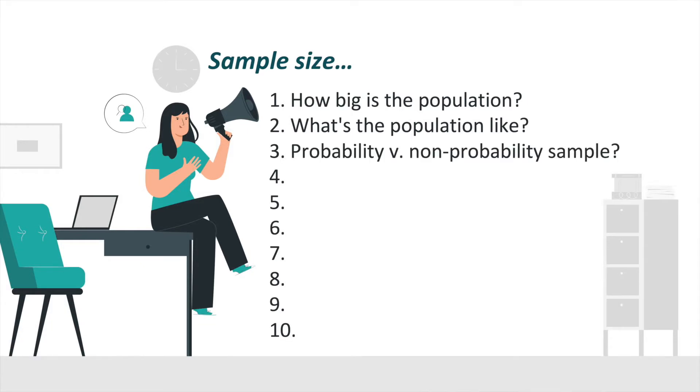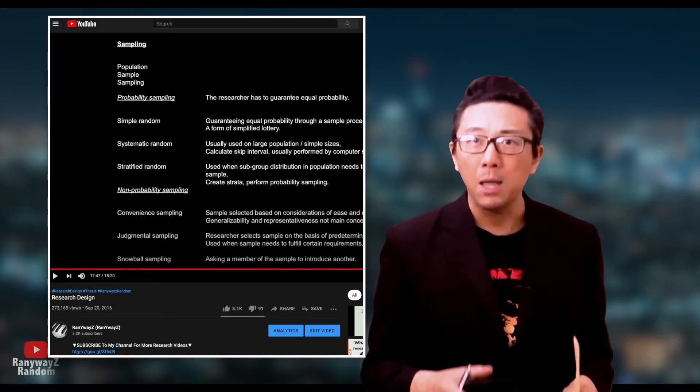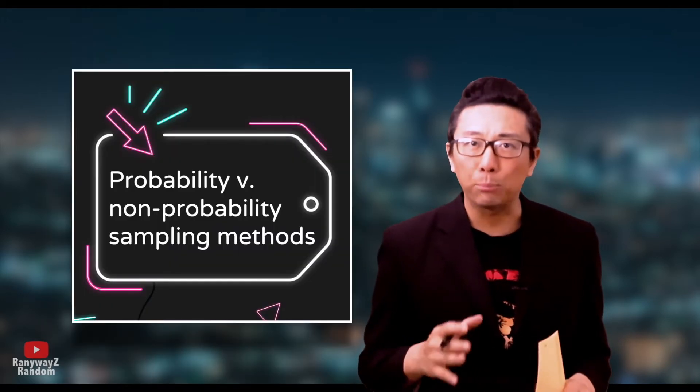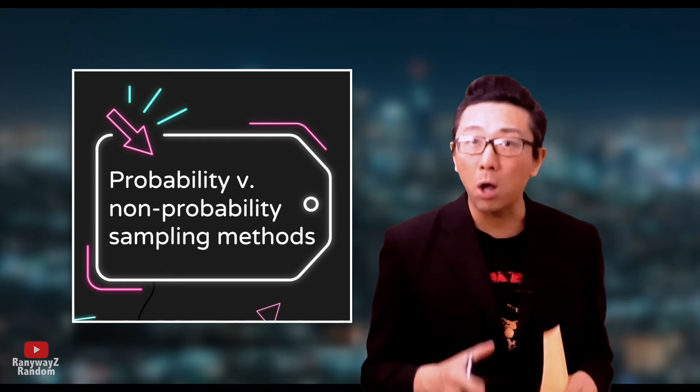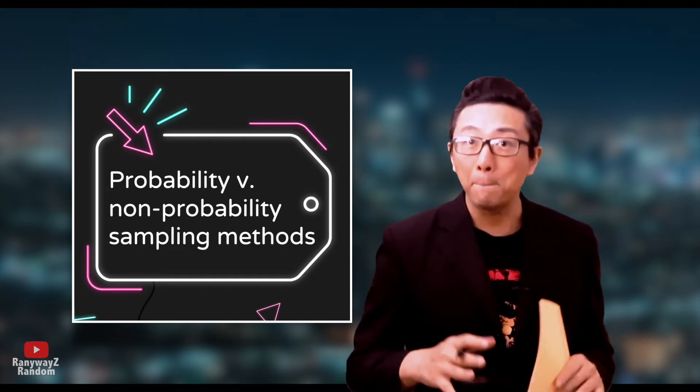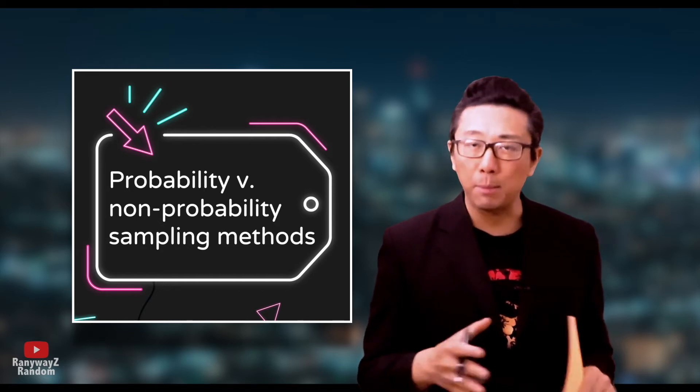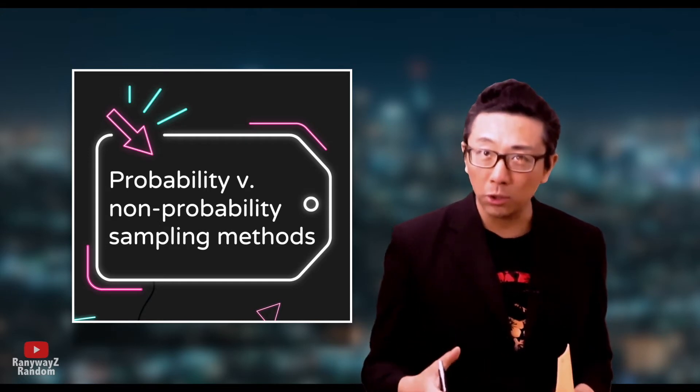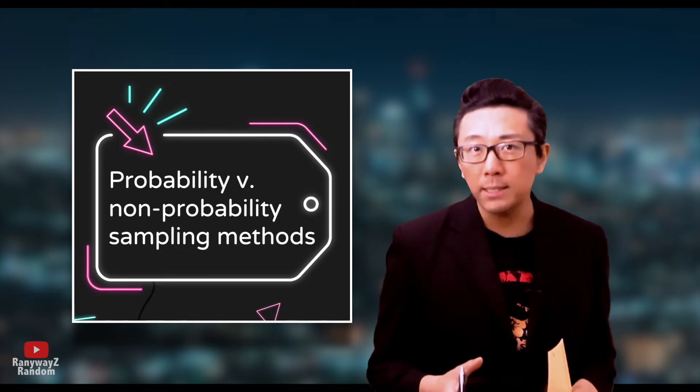Consideration number three, probability sampling or non-probability sampling. Firstly, let me link up some other videos of mine in which I discussed probability versus non-probability sampling methods. But here for this video, the point I'm trying to make is this. Generally speaking, if we use a probability sampling method to sample, it is more justifiable that the sample size is a little bit smaller. This is because probability sampling methods by and large guarantee equal probability. In other words, under this method, every subject in the population stands the same chance of being chosen as part of the sample, which in turn facilitates representativeness.